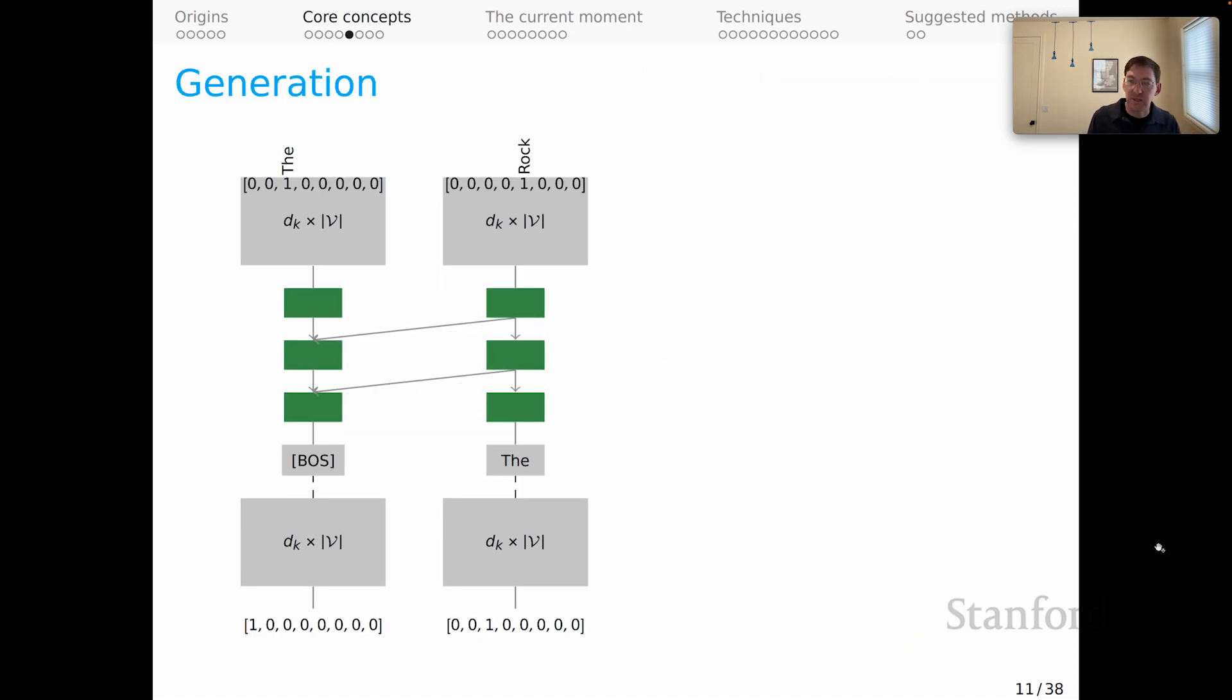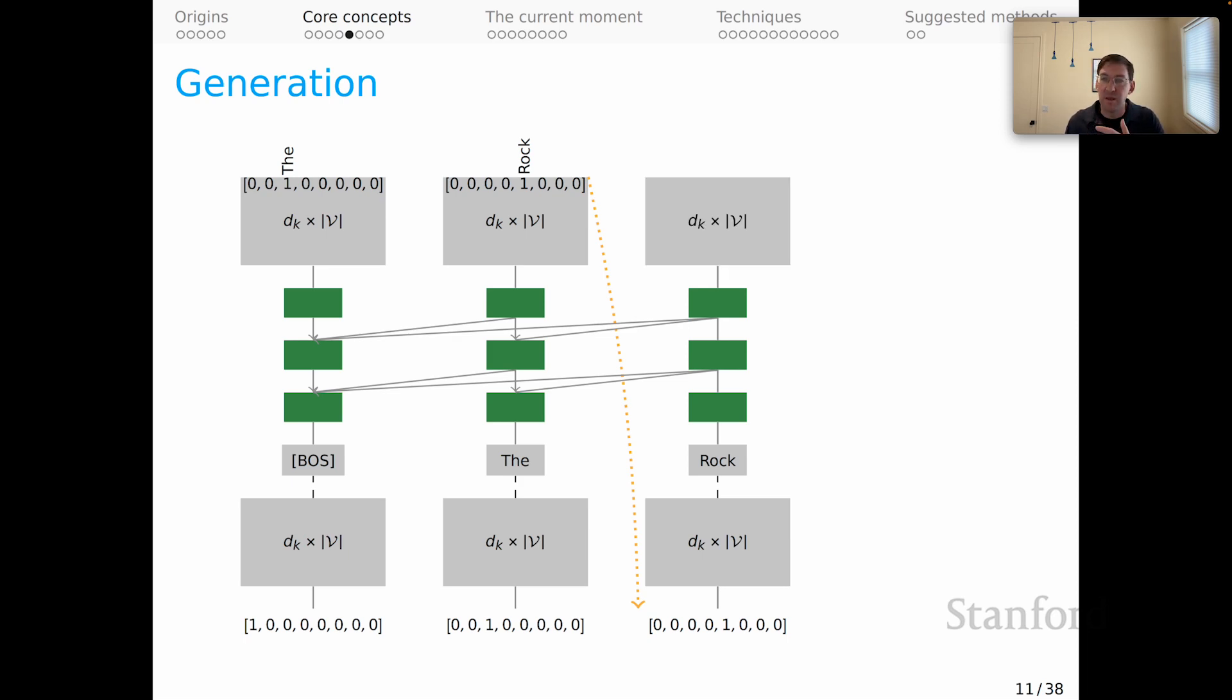That was for training. Our actual focus is on frozen language models for this unit, and so we're really going to be thinking about generation. So let's think about how that happens. Let's imagine that the model has been prompted with the beginning of sequence token and the, and it has produced the token rock. We use rock, the one hot vector there, as the input to the next time step. We process that and make another prediction.